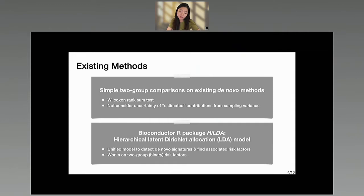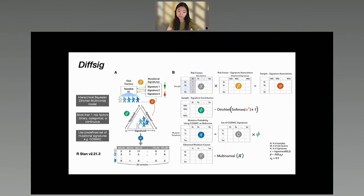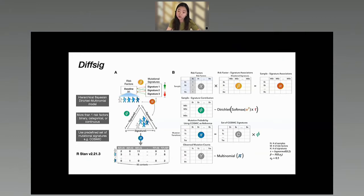We really liked the idea of HILDA, but we wanted to change and add more features, so we developed what we call DiffSig. What it does can be summarized in three parts. First, we consider the uncertainties derived from sampling, like HILDA, using a hierarchical model specified in Stan. Second, we allow for more than one risk factor at a time, of any type — binary, categorical, or continuous — instead of just a single binary variable. Third, we allow the use of a predefined set of signatures rather than finding our own, making it more comparable to previous studies based on COSMIC signatures, while also allowing users to provide their own signatures from a de novo method.